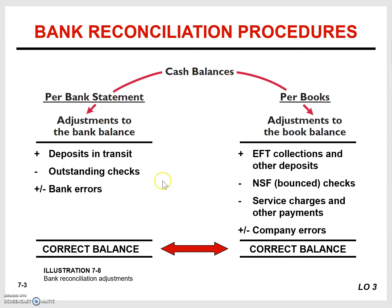The next part of the reconciliation is to adjust the company's balance from their general ledger to the same correct balance. We start off with the amount in the company's books and then add any electronic funds transfers that were collected from the bank. For example, if a customer sent a wire transfer directly to the bank, you would add that amount to the company's financial records.